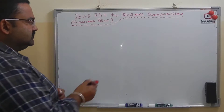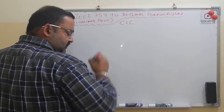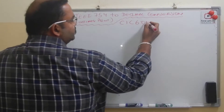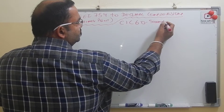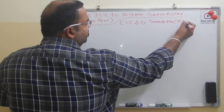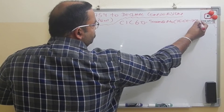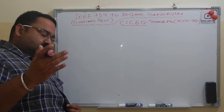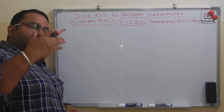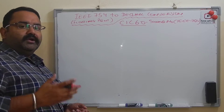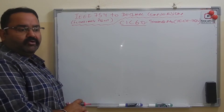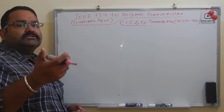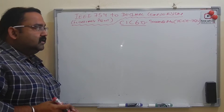Suppose our stored number is C1C60. This is our stored number in IEEE 754 format. After we convert a number to IEEE 754 floating point, it is stored in hexadecimal format, and now we want to convert it back to the original binary number.